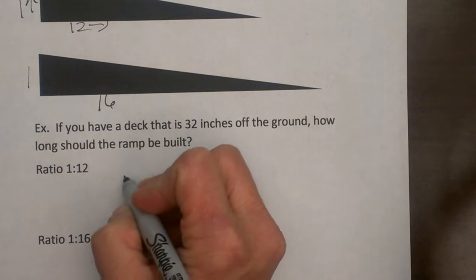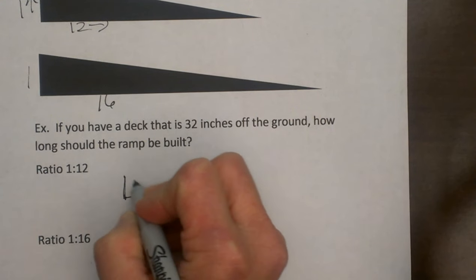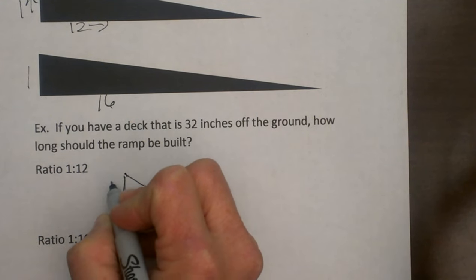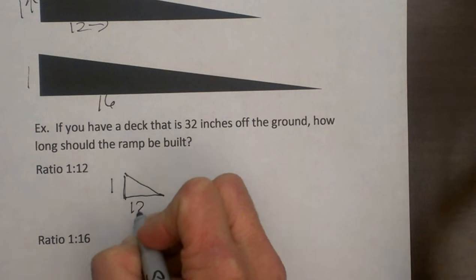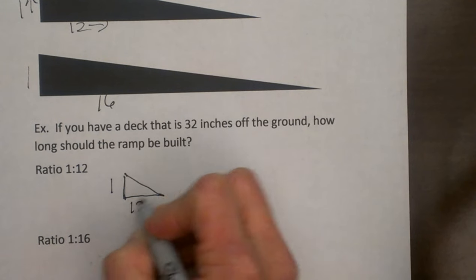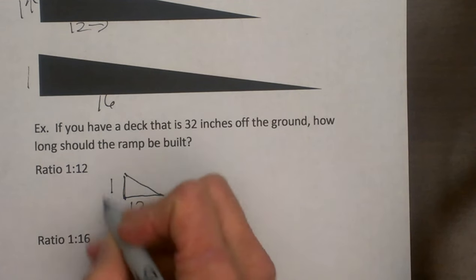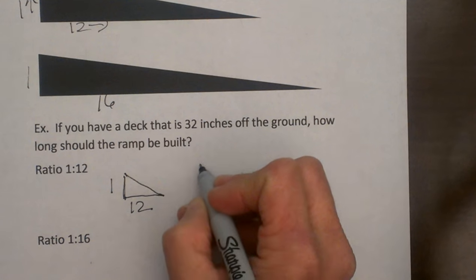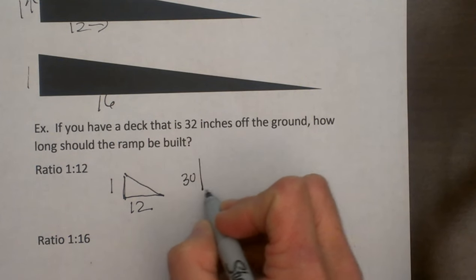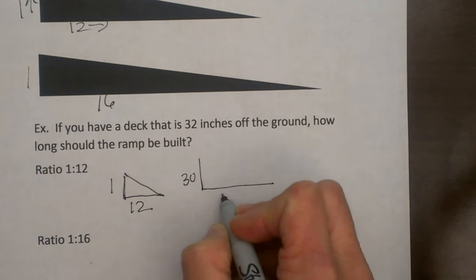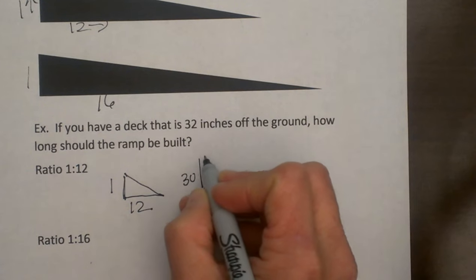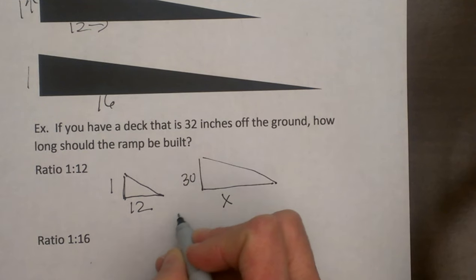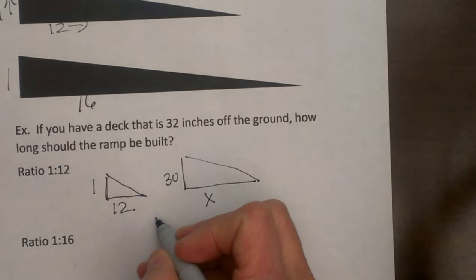I am going to draw a 1 to 12 ratio, and that is my basic formula. Now my deck is going to be 30 inches tall and I need to know how long I need to make that ramp. So I am going to call that x, and then I am going to set up a proportion.